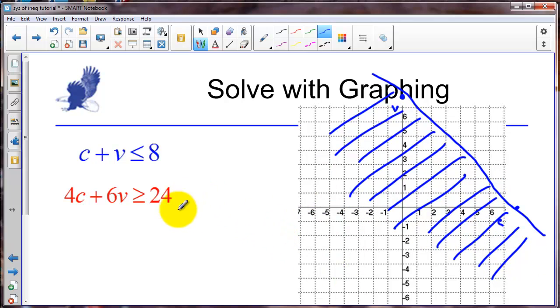And we keep going all the way down here. Now if we look at our other constraint, our other inequality. If we use hide and seek again. If we hide the v we've got c we would divide by 4. So we've got c is 6.